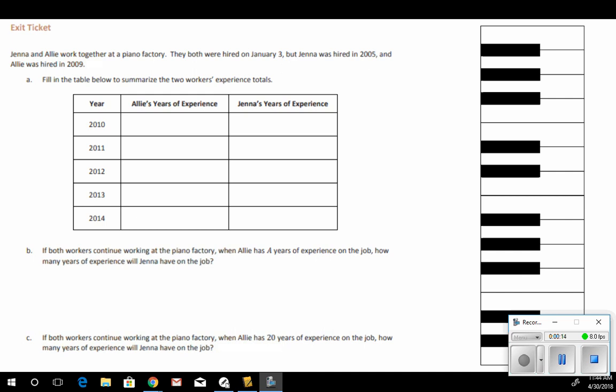Jenna and Allie worked together at a piano factory. They both were hired on January 3, but Jenna was hired in 2005 and Allie was hired in 2009. Fill in the table below to summarize the two workers' experience totals.